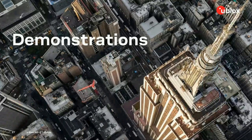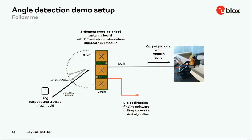Now I'd like to show a few demonstrations in the form of videos. The first video is a simple angle detection demo setup — a follow-me application. We have a tag moving inside a room, and the signals are picked up by a three-element antenna. The uBlocks direction finding software Uconnect Locate performs the angle of arrival measurement and outputs the angle via UART to a rotor connected to a camera, which follows the person holding the tag inside the room.